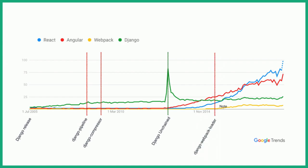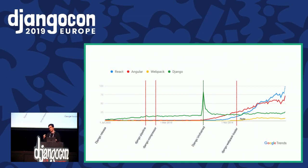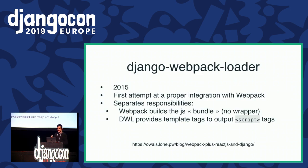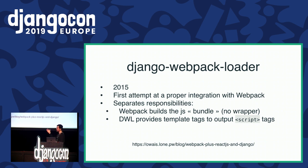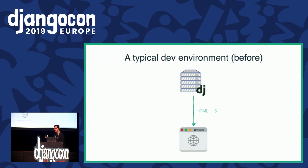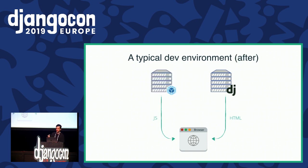A few years later in 2015, Django webpack loader came out — it's the first attempt at integrating webpack and Django together. The goal here was to really separate the responsibilities: building the JavaScript for the browser and serving it. Before that, Django Pipeline and Django Compressor were doing all of this. From now on, we would leave webpack in charge of building the bundle and Django in charge of just generating a script tag that links to it. So it transformed the development environment from a single process to a dual environment where both webpack and Django are running — Django generating the HTML and pointing to webpack, which serves the JS.